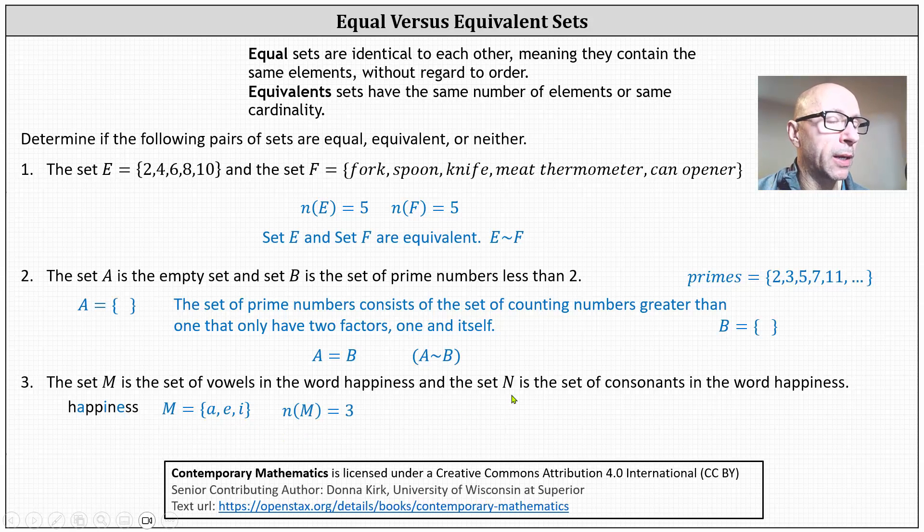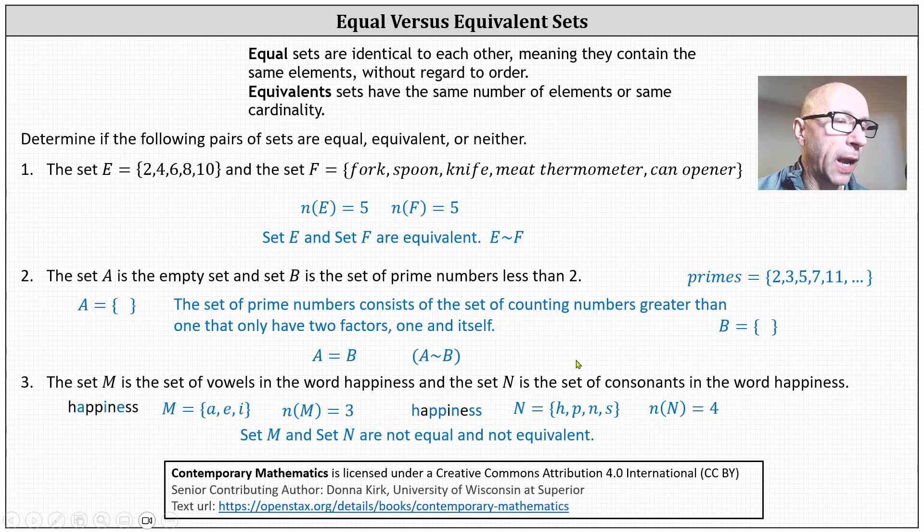And now let's determine set N, which is the set of consonants in the word happiness. So going back to the word happiness, the consonants are H, P, N, and S, which indicates set N contains the elements H, P, N, and S. Notice the cardinality of set N is four. So we don't have equal sets because the elements in the sets are different and the cardinalities are not equal, which indicates the sets are not equal and not equivalent, which we can also express using the notation shown here on the right.